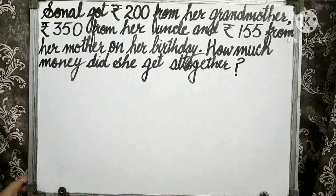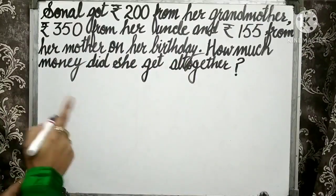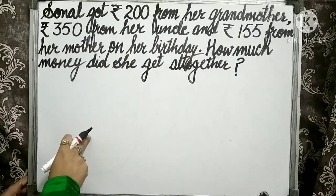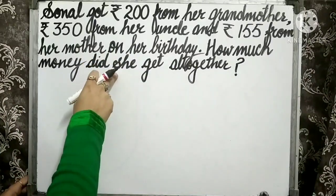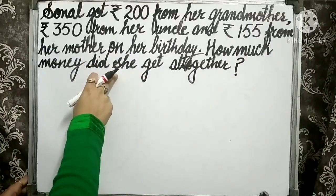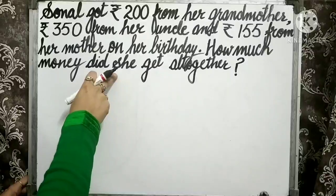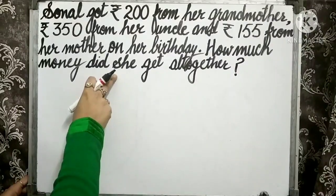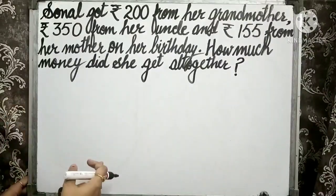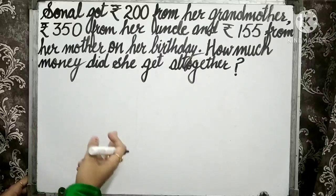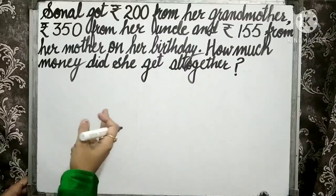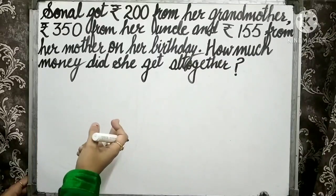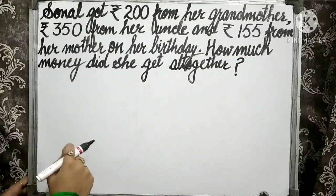Children, the second step is that you have to think about which operation should be done here — whether you have to do addition, subtraction, multiplication, or division.